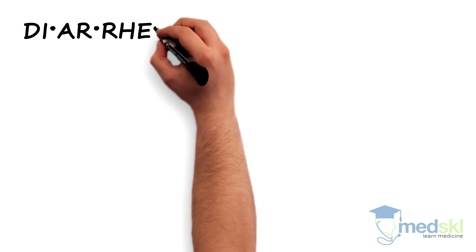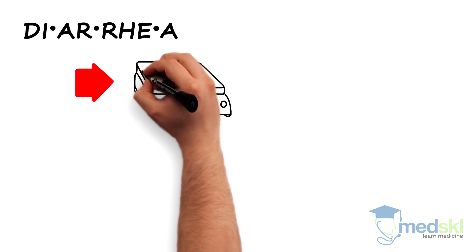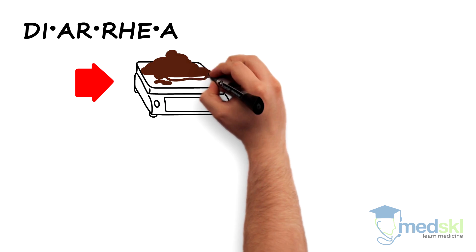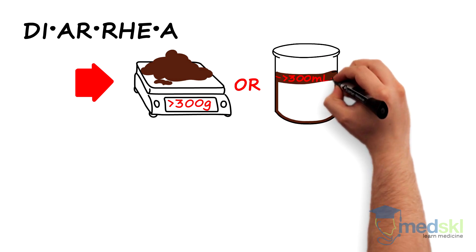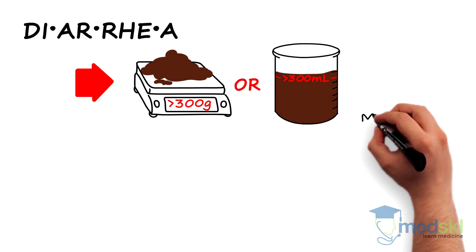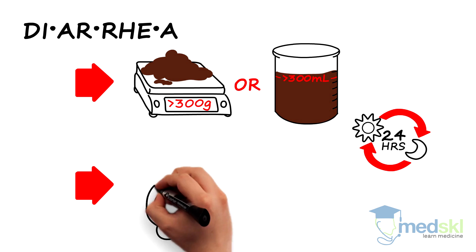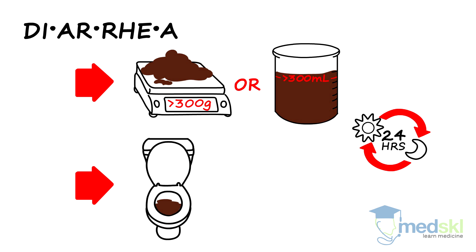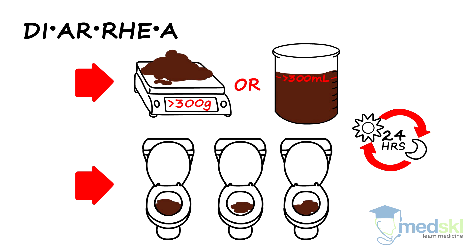There are several definitions for diarrhea. The most scientific approach is a stool weight over 300 grams or stool volume over 300 milliliters in a 24-hour period. The more practical definition is a stool frequency over three times per day with a loose stool consistency.